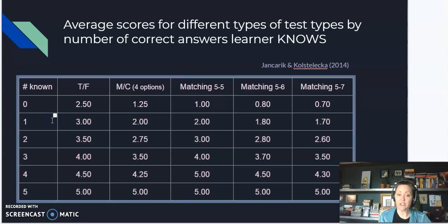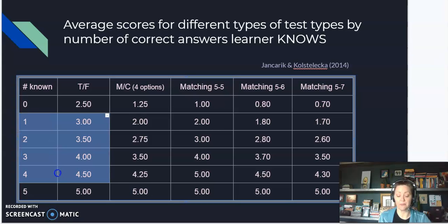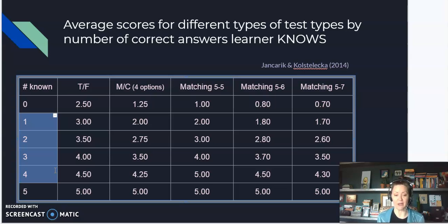So the question really becomes, what happens in this middle ground? And that's where most learners are, right? Most learners know one, two, three, or four out of every five correct answers.